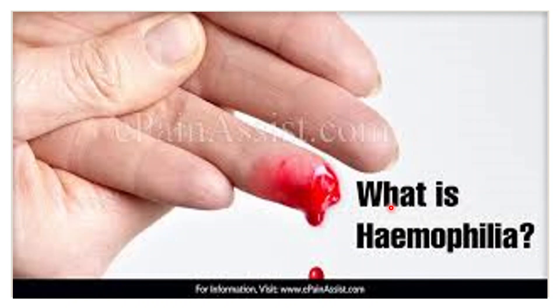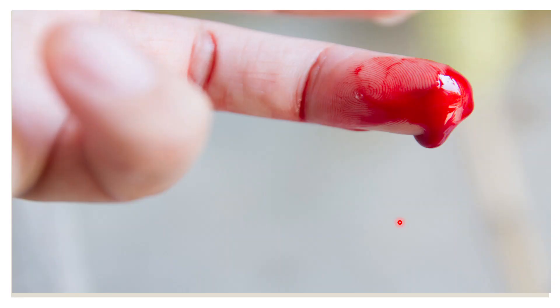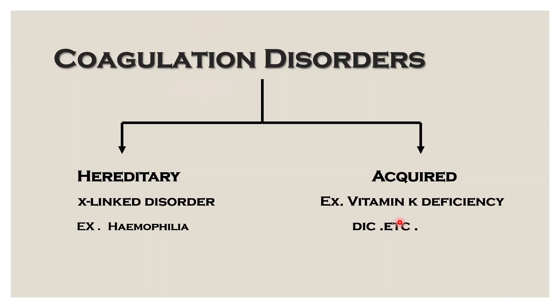So what is Haemophilia? Haemophilia in layman's terms is nothing but a bleeding disorder which involves coagulation disorders. Let us learn about coagulation disorders. They are generally of two types: hereditary and acquired.